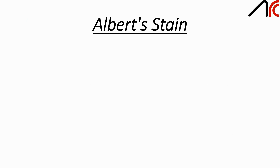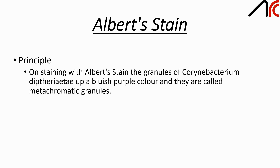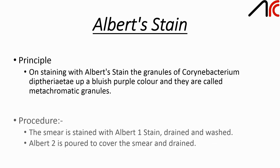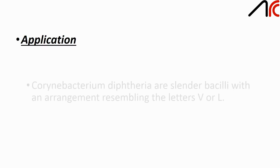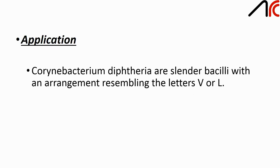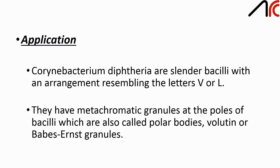The last one is Elbert stain. On staining with Elbert stain, the granules of Corynebacterium diphtheriae take up a bluish purple color and hence they are also called metachromatic granules. Procedure: the smear is stained with Elbert 1 stain, drained and washed. Elbert 2 is poured to cover the smear and drained. Applications: Corynebacterium diphtheriae are cylindrical bacilli with an arrangement resembling the letters V or L. They have metachromatic granules at the pole of the bacilli, which are also called polar bodies or volutin.